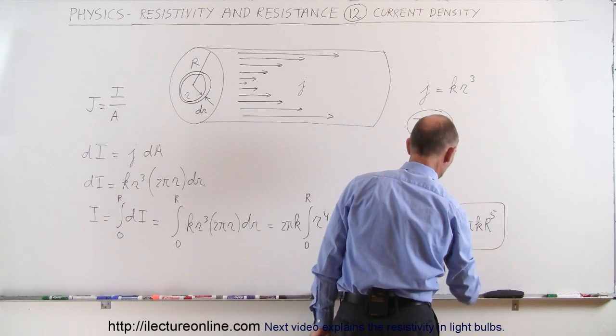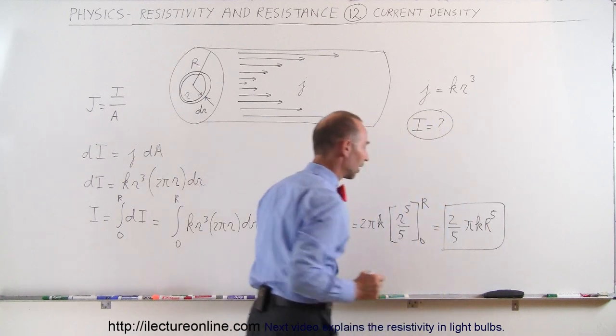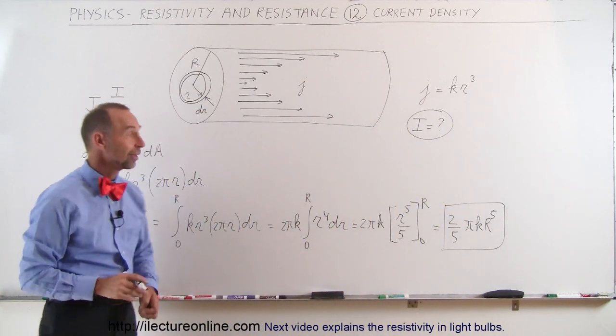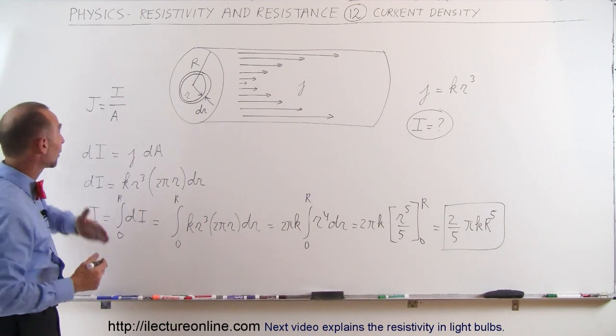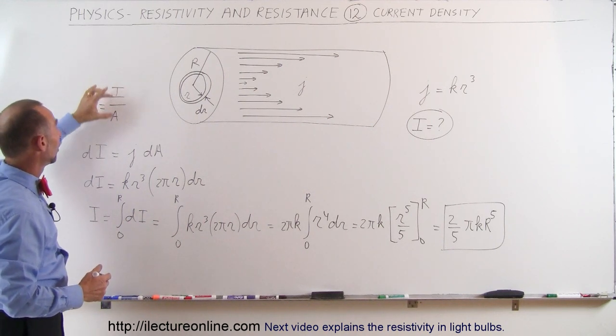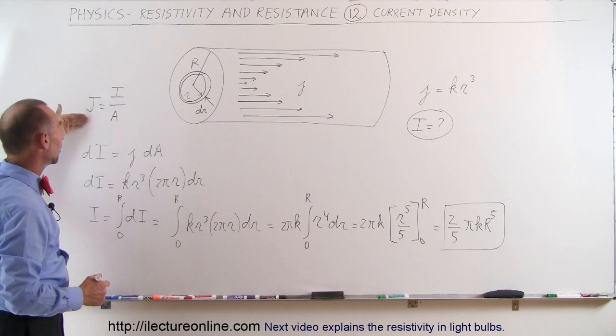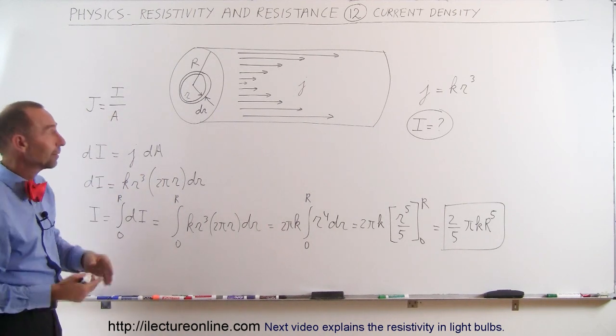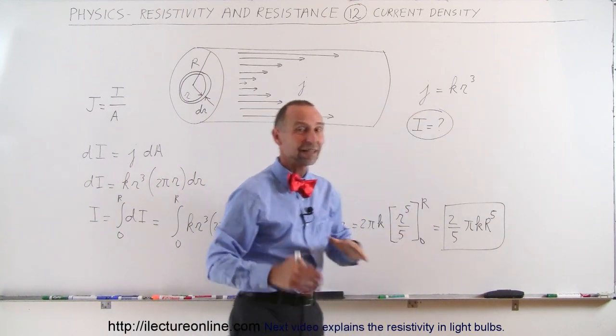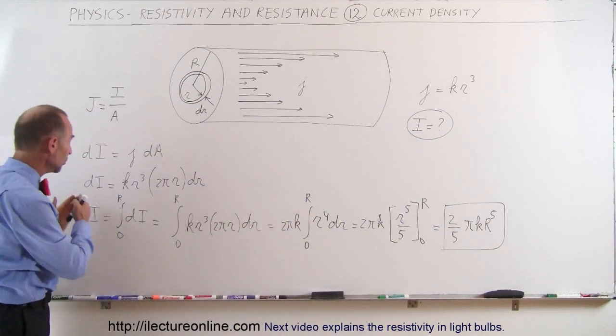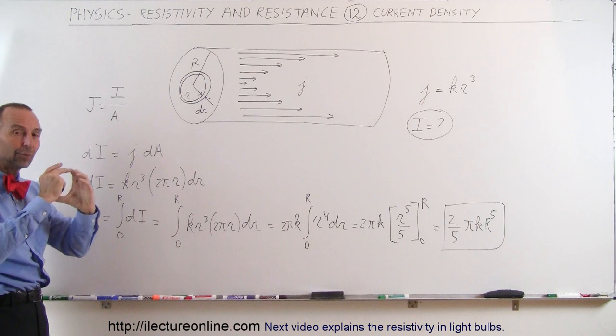And that would be the total amount of current flowing through the conductor with varying current density. And so that's how we deal with current density. So this video shows you what current density is, it's simply current per unit area. If it's a constant, it's simply the total current divided by the total area. But if the current density varies with, in this case, the radius, then to find the total current, we simply have to sum it all up using little ringlets.